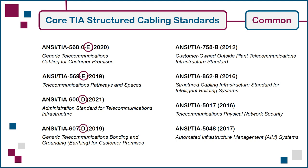Also included are the 758 Standard for Campus-based or Customer-Owned Outside-Plant Cabling, the 862 Standard for Building Automation or Intelligent Building Systems, the 5017 Standard covering Physical Security for Cabling Infrastructure, and the 5048 Standard for Automated Infrastructure Management (AIM) Software, which is used to document and track changes to cabling infrastructure. Note that the letters E, D, and B after the numbers refer to the revision of the standard.